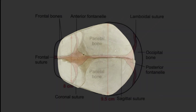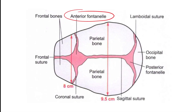From the top view, we have a diamond-shaped anterior fontanel, also known as Bregma, which is a meeting point of frontal, coronal, and sagittal sutures from front to back, and a triangular-shaped posterior fontanel, which is a meeting point of sagittal and lambdoid sutures. Here we have transverse diameters like biparietal and bitemporal diameters, with values 9.5 and 8.5 cm respectively.